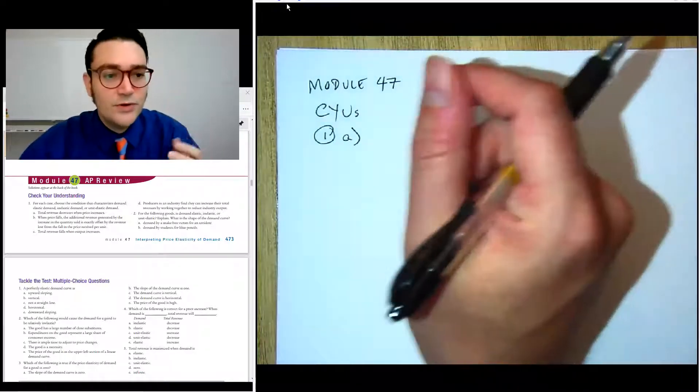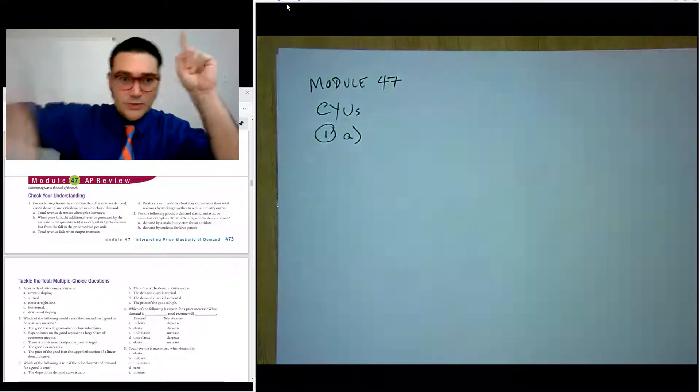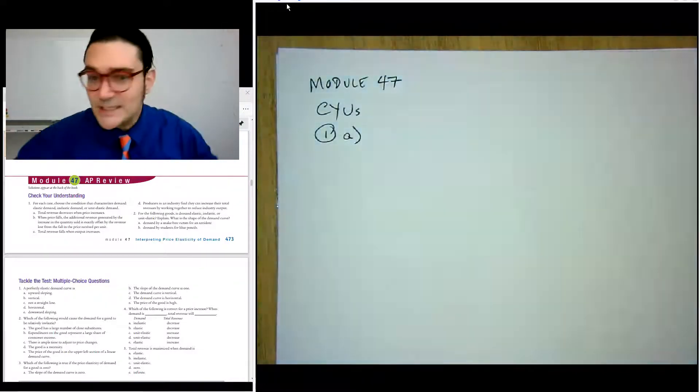So total revenue goes down when price goes up. If you remember, price goes up, total revenue goes down, so we are elastic.